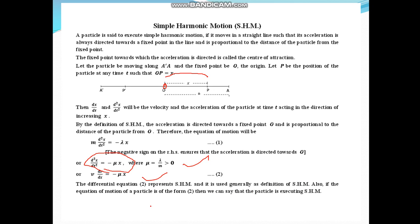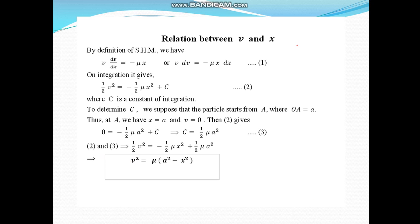If the equation of motion of a particle is of that form, then we can say the particle is performing SHM. Now there are some relations between v and x. By definition of SHM: v·dv/dx = −μx, or equivalently v·dv = −μx·dx.